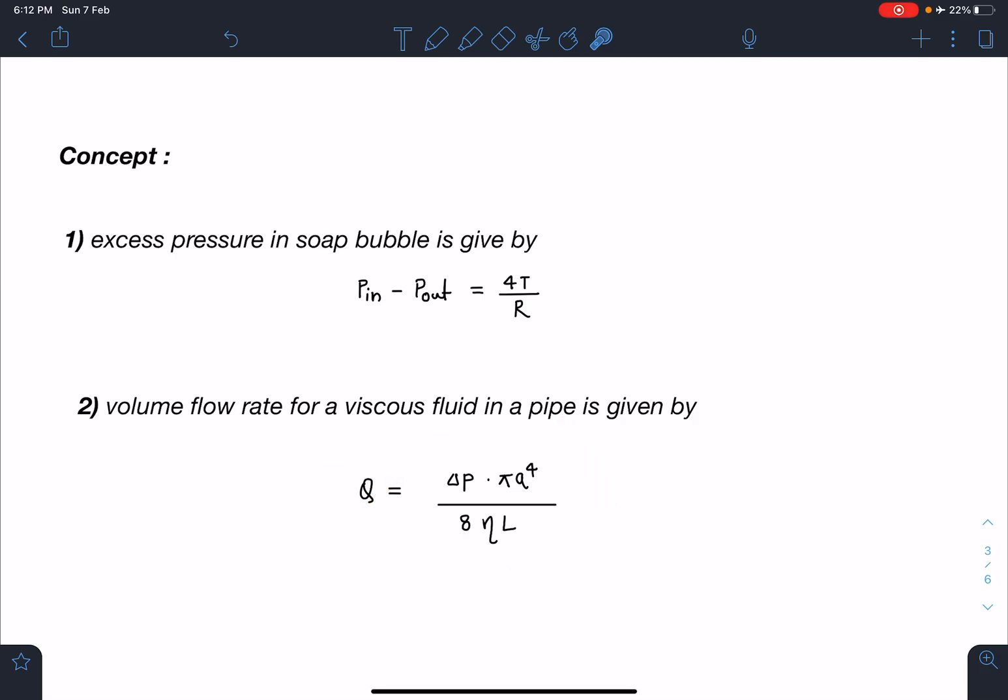When a viscous fluid is passing through a pipe, the volume flow rate is given by Δp which is pressure difference into πa⁴ divided by 8ηL, where a is the radius of the tube.